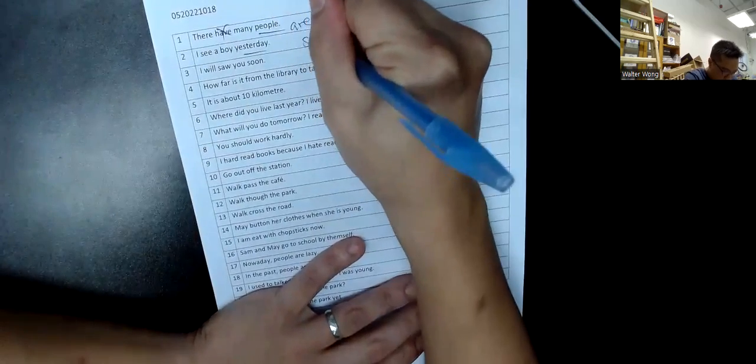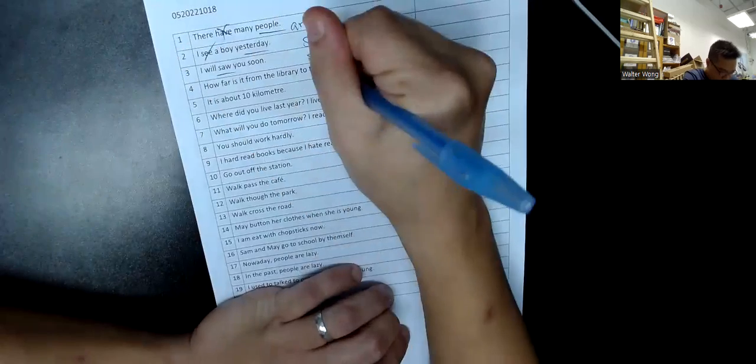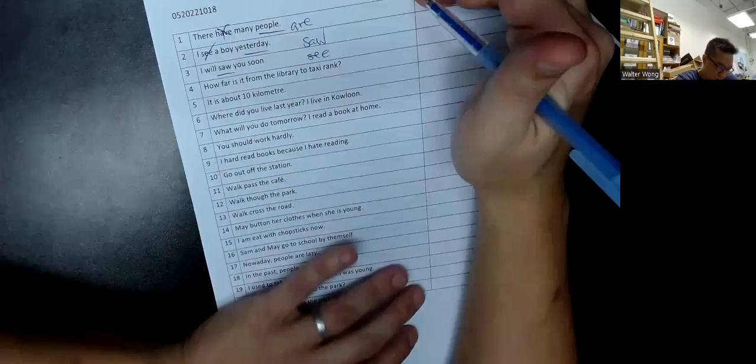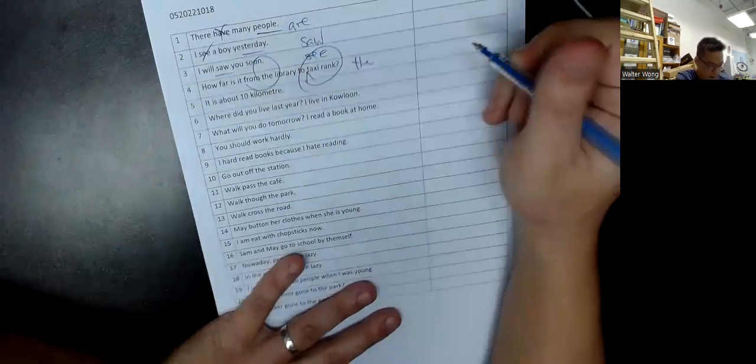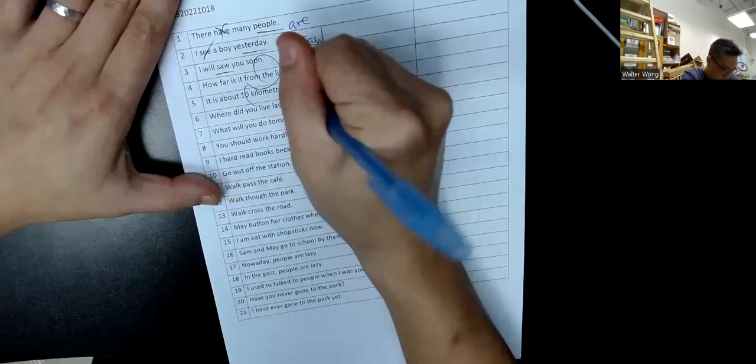Simple past - when something happened at a clear time, use original form. How far is it from the library to the taxi rank? Ten kilometers.